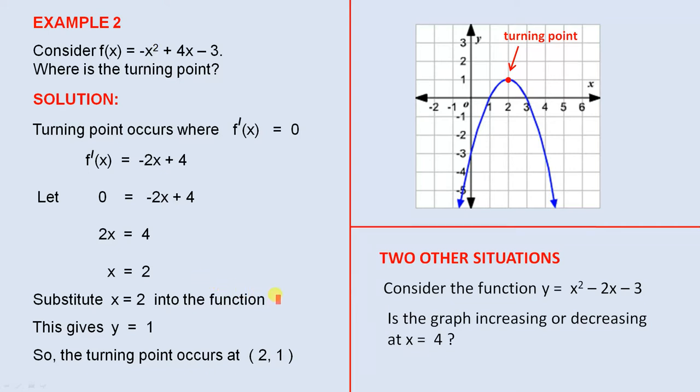So we substitute x equals 2 into the function. This gives y equals 1, so the turning point occurs at (2, 1), and we can see that here.